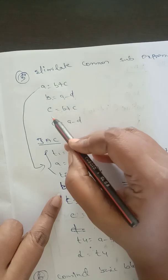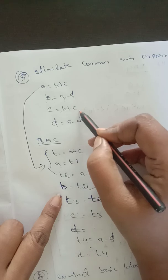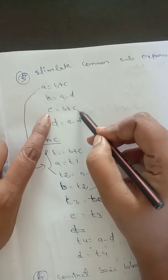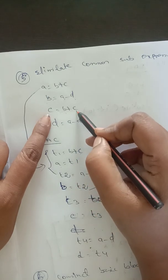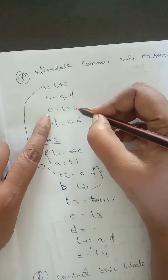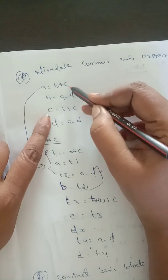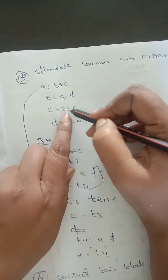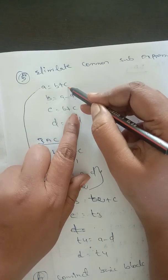Now for the third statement c equal to b plus c, we check whether b plus c is already evaluated or not. Checking the previous lines: a equal to b plus c, and b equal to a minus d — so b plus c is already evaluated.